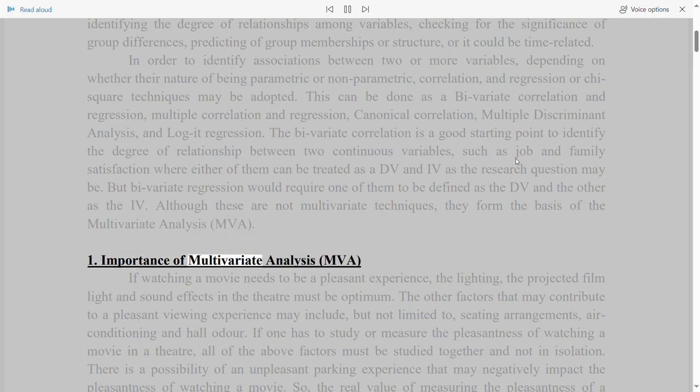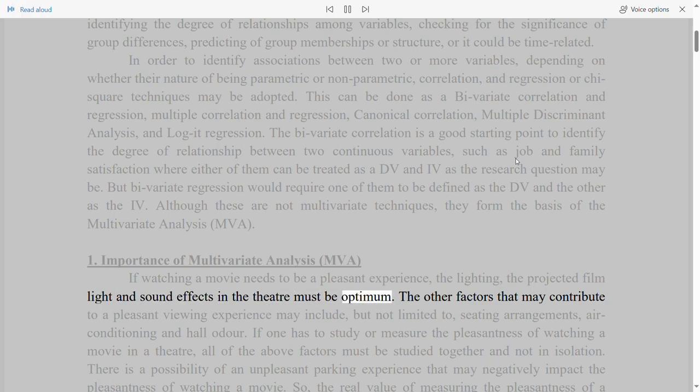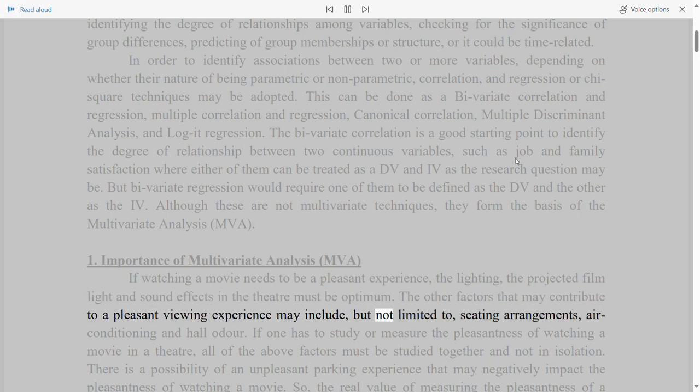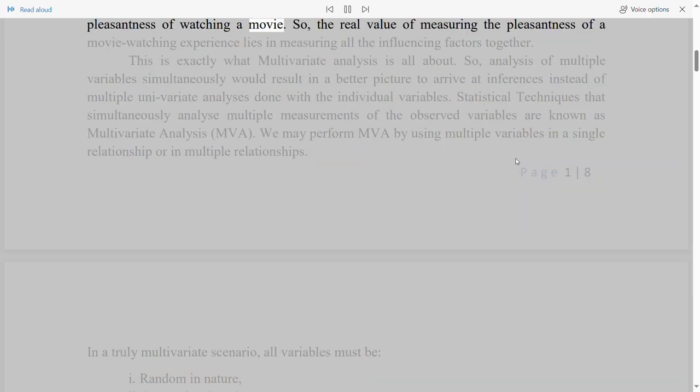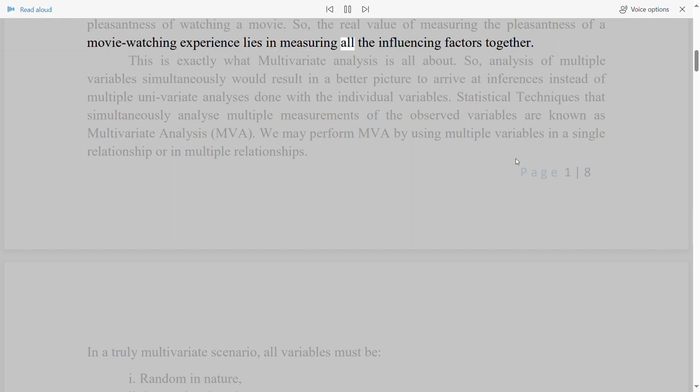1. Importance of multivariate analysis. If watching a movie needs to be a pleasant experience, the lighting, the projected film, sound effects in the theatre must be optimum. The other factors that may contribute to a pleasant viewing experience may include, but not limited to, seating arrangements, air conditioning and hall odor. If one has to study or measure the pleasantness of watching a movie in a theatre, all of the above factors must be studied together and not in isolation. There is a possibility of an unpleasant parking experience that may negatively impact the pleasantness of watching a movie.